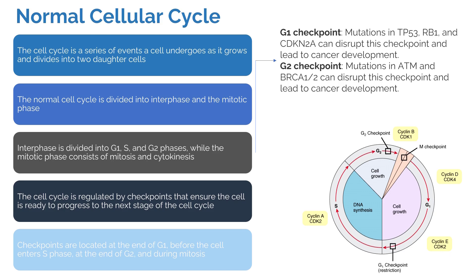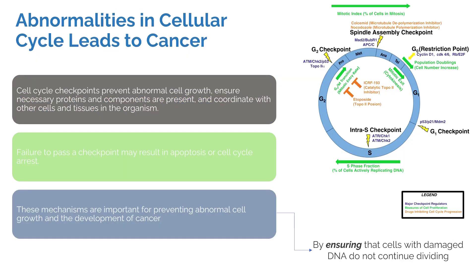The cell cycle is regulated by checkpoint genes that ensure the cell is ready to progress to its next stage and eventually die. Checkpoints are located at the end of G1 before the cell enters S phase, and at the end of G2 during mitosis. Abnormalities in these cellular cycles can eventually lead to cancer and other diseases.